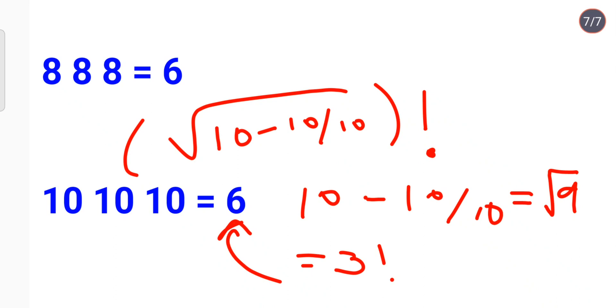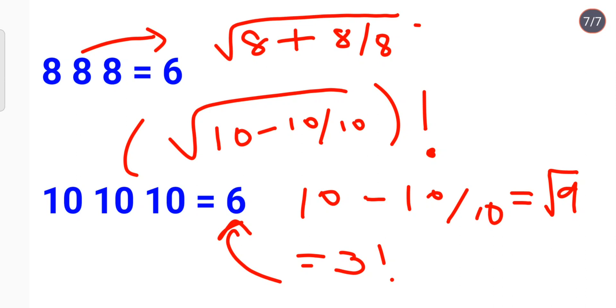Similarly for 8: instead of minus we do 8 plus 8 divided by 8, which gives 9. Take the square root to get 3, then apply factorial to again get 6. I hope you all have understood how to solve these kinds of puzzles. That's it for today — see you in the next video!